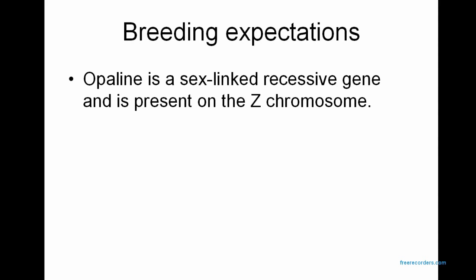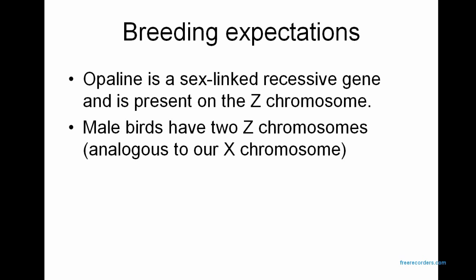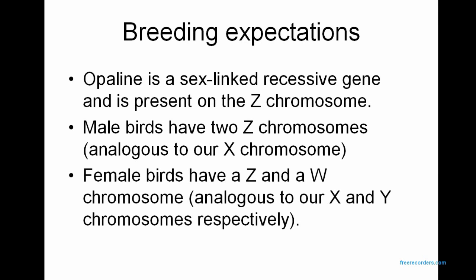Breeding expectations with Opalines. Opaline is a sex-linked recessive gene and is present on the Z chromosome. This means you need two copies for it to show, because it's recessive. Male birds have two Z chromosomes — analogous to our X chromosome — and female birds have a Z and a W chromosome, analogous to our X and Y. So they're kind of flipped compared to mammals: in birds it's the females that have the two different chromosomes, and the males are homozygous for the sex chromosomes. Basically the female birds determine gender in birds.